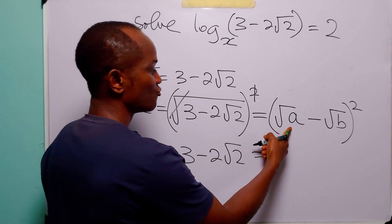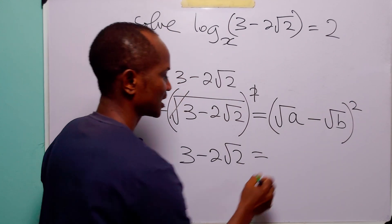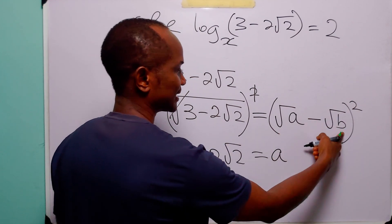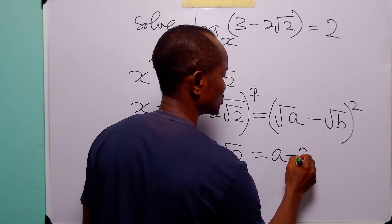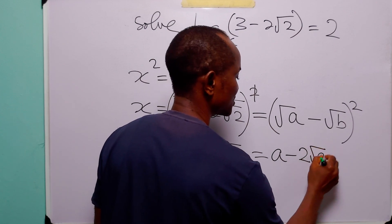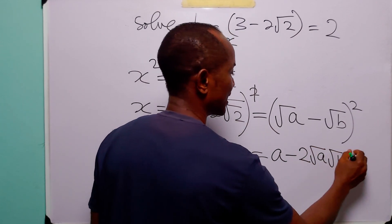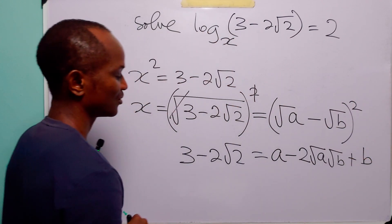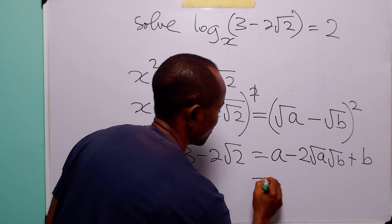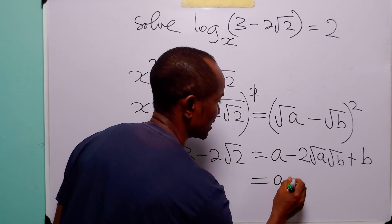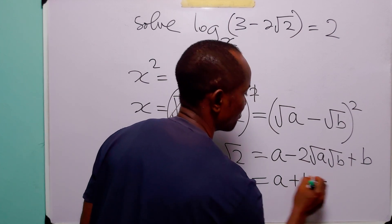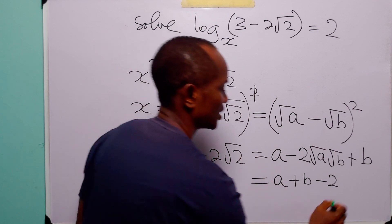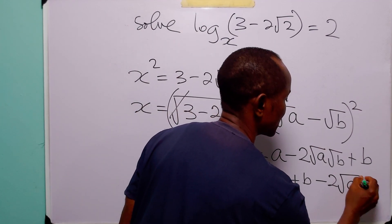When we do that, the right-hand side expands: root a squared is equal to a, then minus 2 times root a times root b, and then plus root b squared which is equal to b. When we simplify the right-hand side we have a plus b minus 2 root ab — combining those two terms as root a times b.